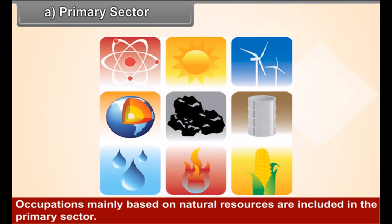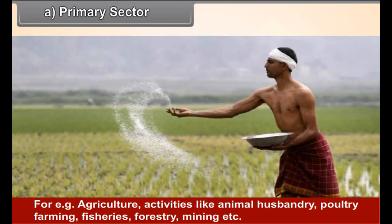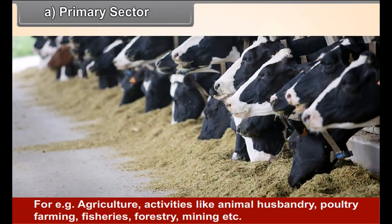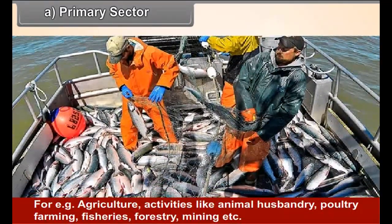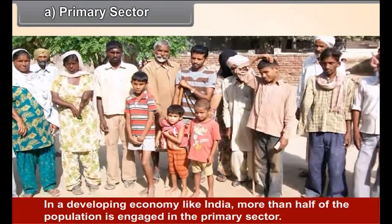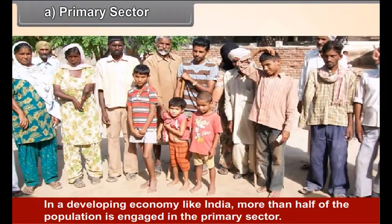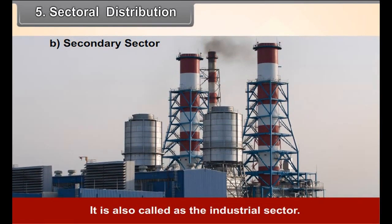A. Primary sector. It is also called the agricultural sector. Occupations mainly based on natural resources are included in the primary sector. For example, agriculture, animal husbandry, poultry farming, fisheries, forestry, mining, etc. In a developing economy like India, more than half of the population is engaged in the primary sector.